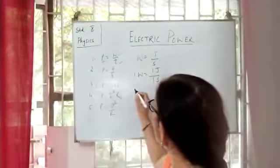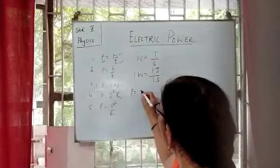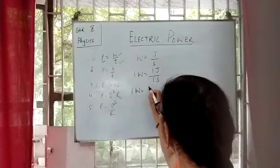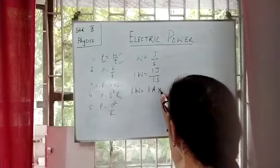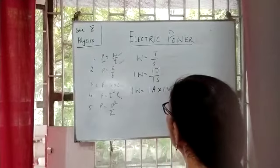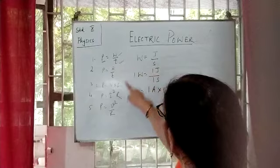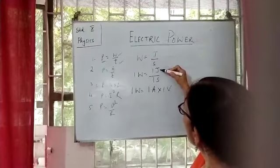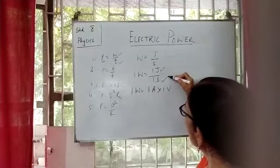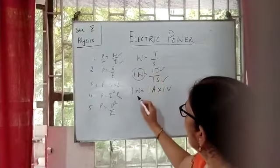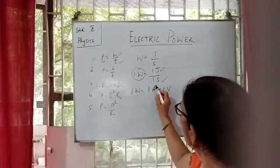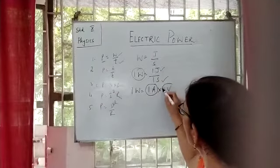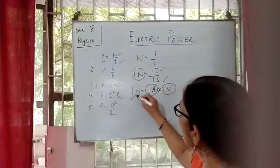It means 1 watt is equal to 1 ampere into 1 volt. We can also say, if the energy consumed is 1 joule in 1 second, then that is 1 watt. We can also say that when 1 ampere current is passing through a device against a potential difference of 1 volt, that is 1 watt.